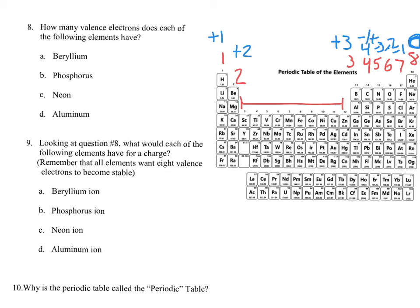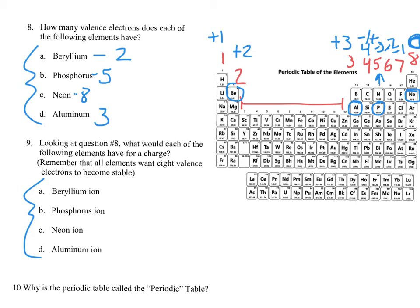Using those trends we can fill in answers straightforwardly. Beryllium is in group two, so it has two valence electrons. Phosphorus is in group 15, so it has five valence electrons. Neon is in group 18, so it has eight valence electrons. Aluminum is in group 13, so it has three valence electrons. For their ionic charges: beryllium forms a plus two charge, phosphorus having five valence electrons forms a negative three charge, neon being a noble gas forms no charge, and aluminum in group 13 forms a plus three charge.